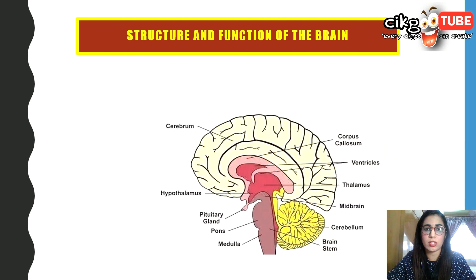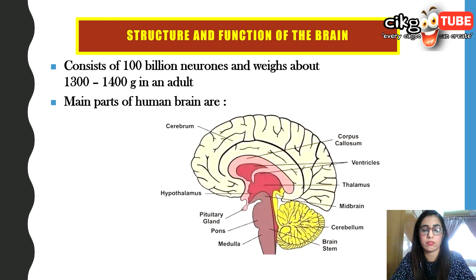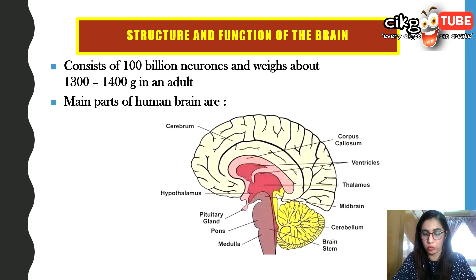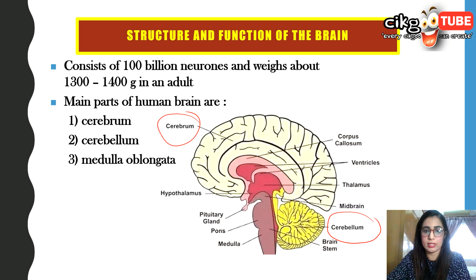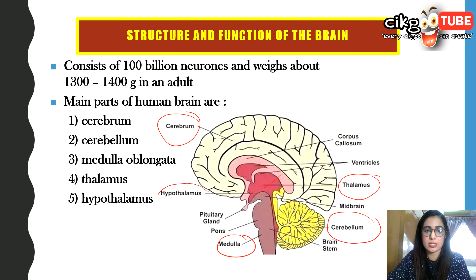Let's look at the structure and function of the brain. The brain consists of about 100 billion neurons and weighs about 1,300 to 1,400 grams in adults. The main parts of the human brain are the cerebrum — the largest part — the cerebellum, the medulla oblongata, the thalamus, the hypothalamus, and the pituitary gland. We will look at each of these parts in turn.